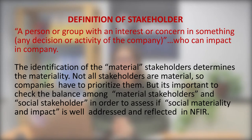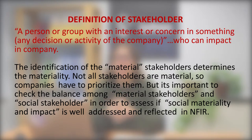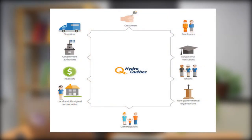The stakeholders of the companies are persons or groups with an interest or concern in any decision or activity of the company. But stakeholders are also those who can impact the company. Some examples of common stakeholders of companies are investors, shareholders, customers and workers, for instance. But each company has specific stakeholders and it is a priority to identify them correctly.